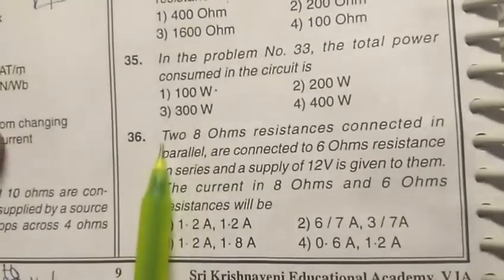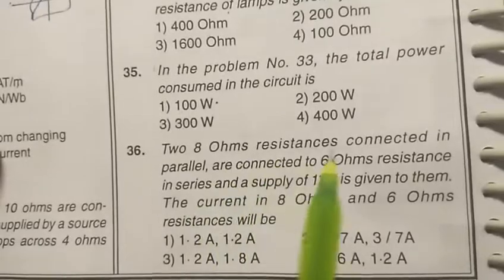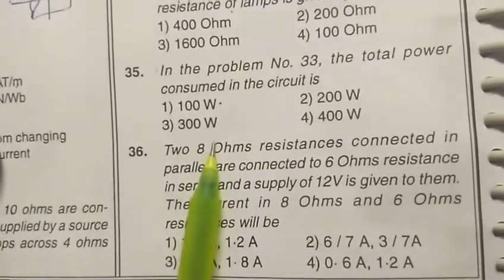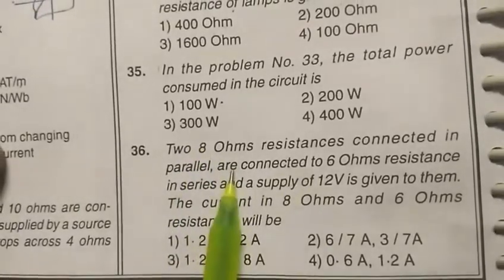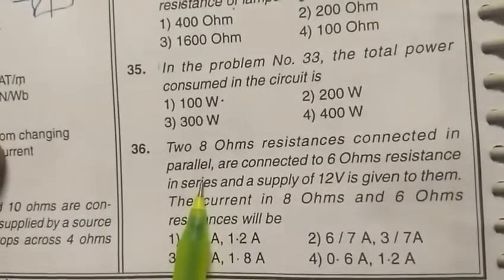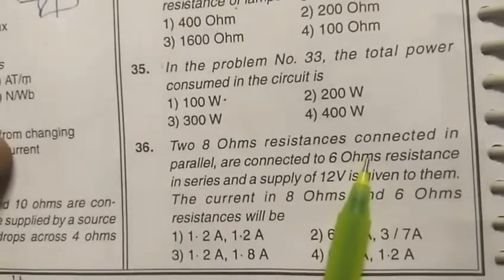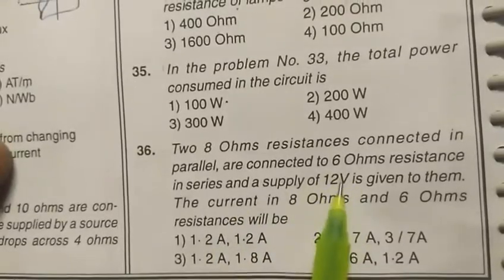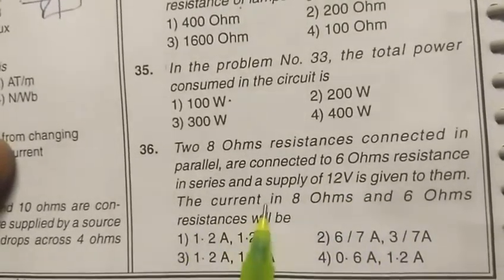Next is two 8-ohm resistances connected in parallel. The equivalent resistance is 8 divided by 2, which is 4 ohms, and this is connected in series with a 6-ohm resistance. So that means 6 plus 4 ohms is 10 ohms total.